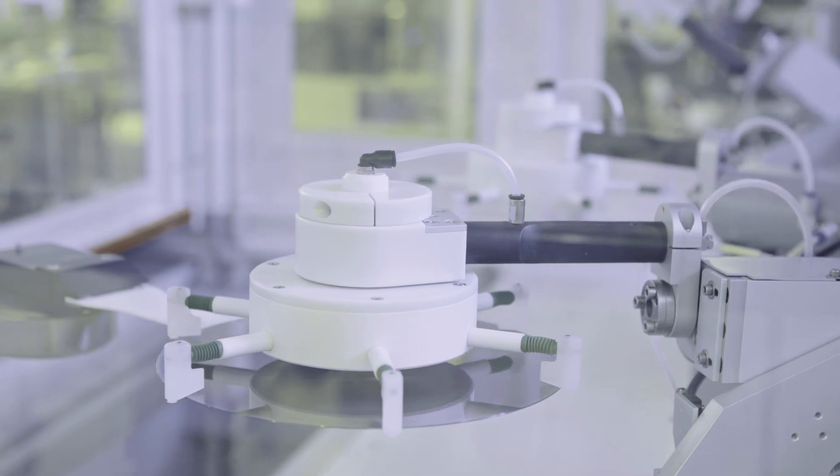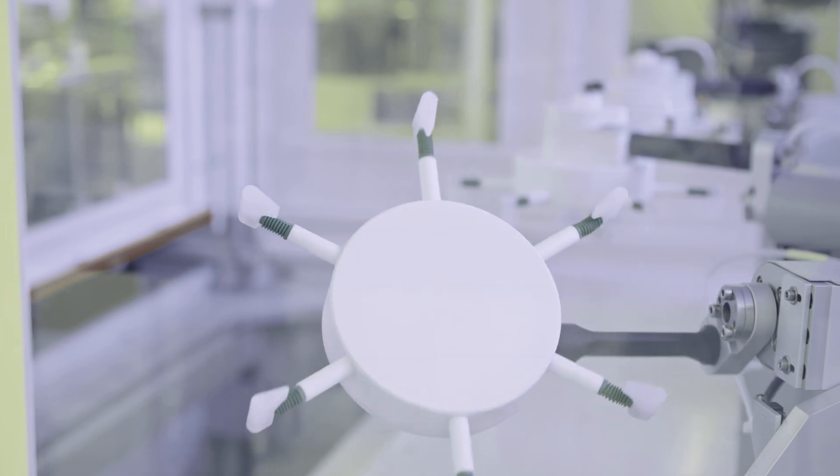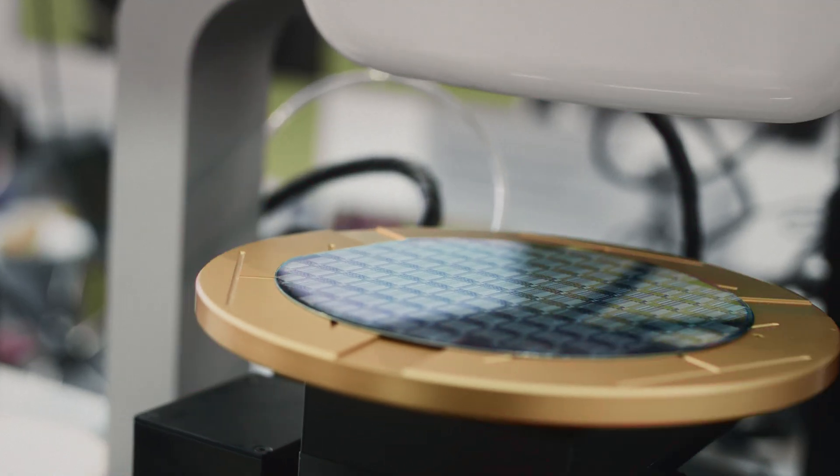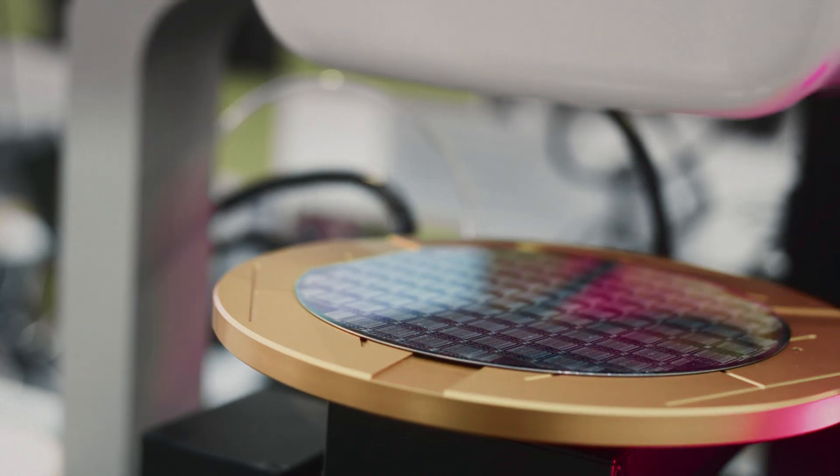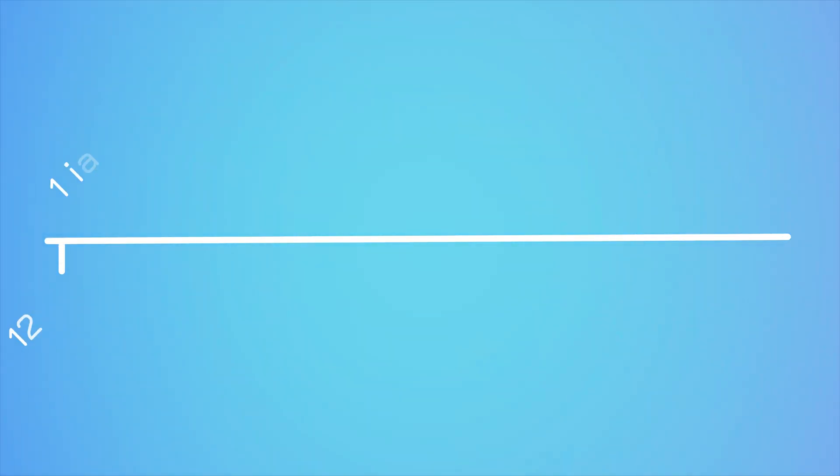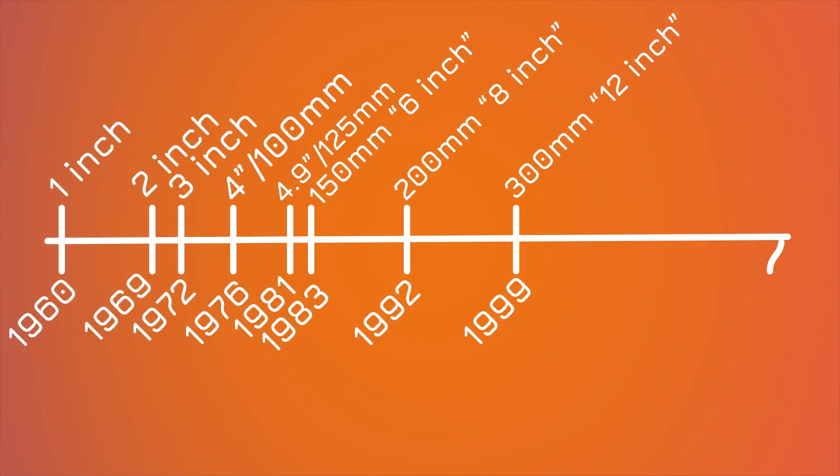Those discs have gradually increased in size over the years. 1969 saw 2-inch wafers, which were 275 micrometers thick. 1972 brought 3-inch at 375 thick. And 1976, they basically settled on metric sizing with 4-inch 100mm wafers, then 4.9-inch 125mm in 1981, 150mm or 6-inch in 1983, 200mm 8-inch wafers in 1992, and 300mm or 12-inch wafers in 1999.